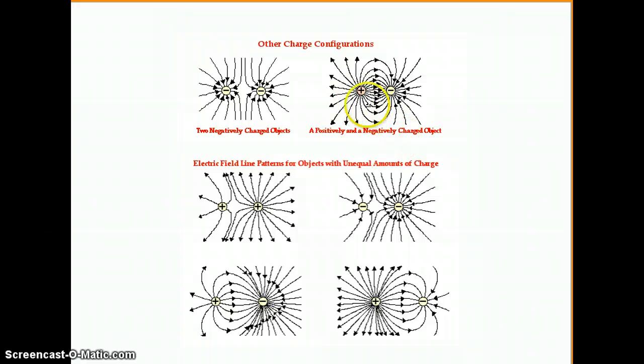So a couple of basic charge configurations you should definitely be familiar with. We saw the two positive charges. Here are two negative charges. The difference really is that the arrows all point in toward the negative. Again, those arrows are in the direction that a positive charge would go. A positive would be pulled in toward the negative. But if you look at the overall pattern, it's almost exactly the same. Technically, it is exactly the same as the pattern from above.